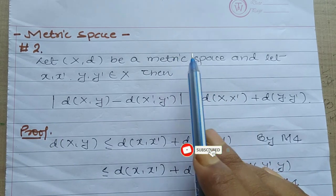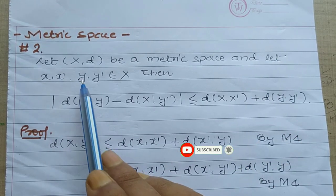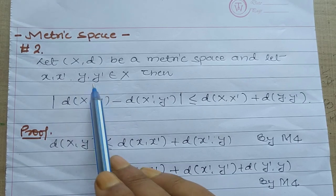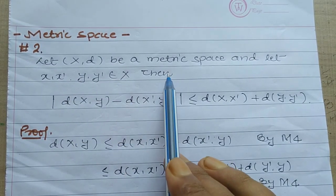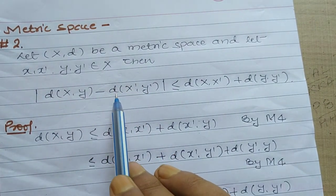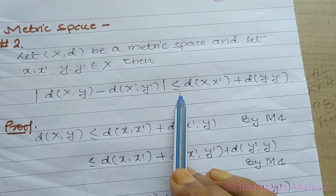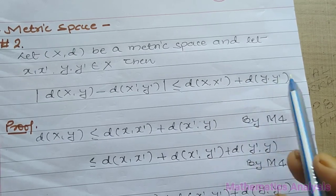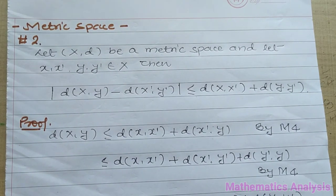So, the metric space here — let X, x' and y'. We will prove from the metric space to the metric space. It becomes a metric space. Since we have to define the metric space, we have to take the metric space here.